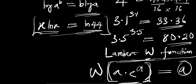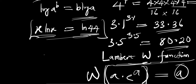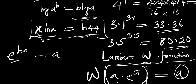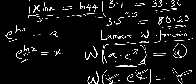To make use of this function, we need to manipulate x times ln of x into the form a times e to the power of a. We use the identity e to the power of ln(x) equals x, so we can replace x with e to the power of ln(x). This gives us e to the power of ln(x) times ln(x), which equals ln of 44.